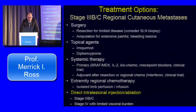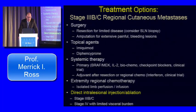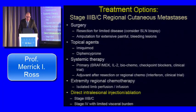Treatment options are variable. Surgery for very limited disease is reasonable. For very extensive, uncontrollable, symptomatic disease, amputation has been used — it doesn't impact survival but provides local regional control, though it is very mutilating. Topical agents like imiquimod and the skin sensitizing agent diphencyprone, used mostly in Australia, have been tried. Systemic therapy can be used as a primary modality — BRAF-positive patients can have BRAF-MEK combination, IL-2, biochemotherapy, and checkpoint blocking agents have all been used. A clinical trial would be most useful for these patients.